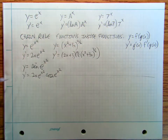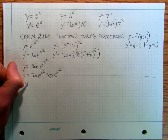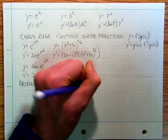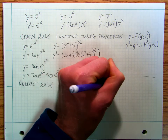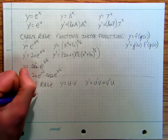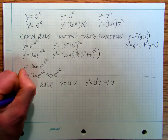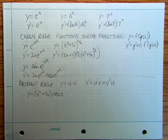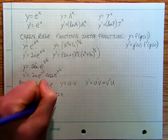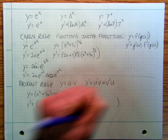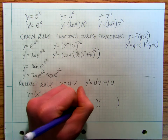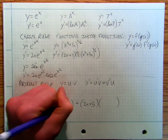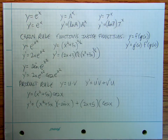Then we have our product rule. y prime is going to be x squared plus five x times two x plus five — took the derivative of that one — so this is minus sine x, and that's cosine x.